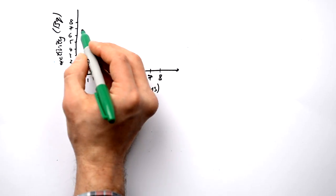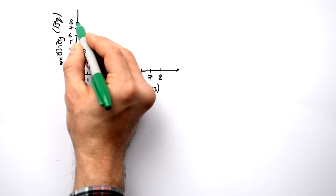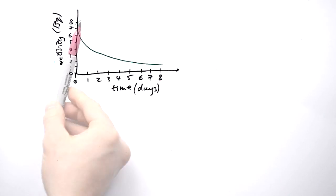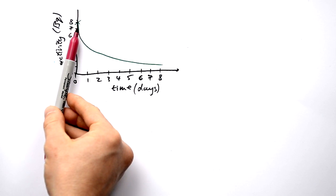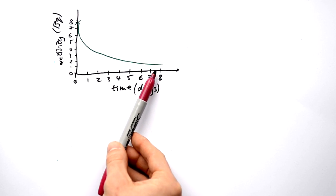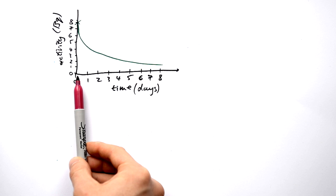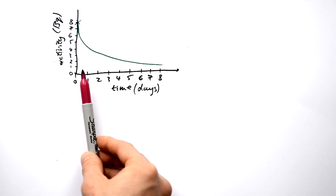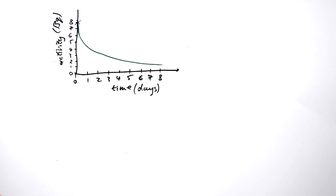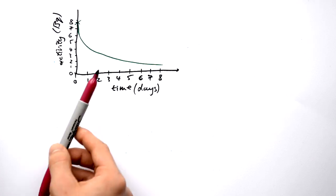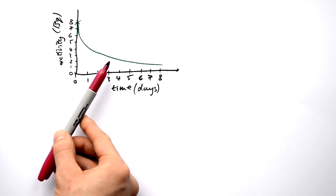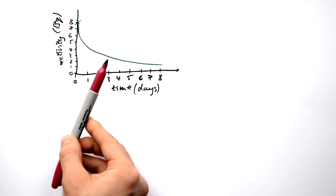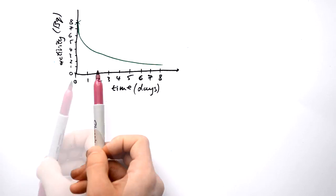So here's what a graph looks like. This kind of shape here goes down and then levels out and doesn't actually get down to zero — it gets very close to zero if you carry on going, but technically it doesn't ever get to zero. This is what we call exponential decay. And for A-level you need to know what that means mathematically, and we'll talk about that in a minute.